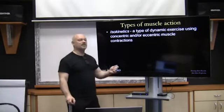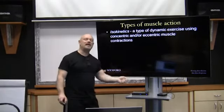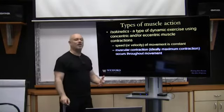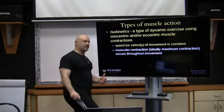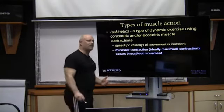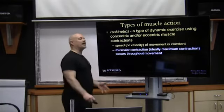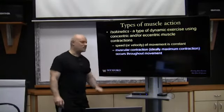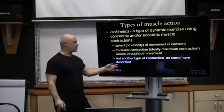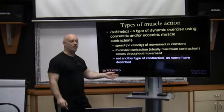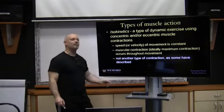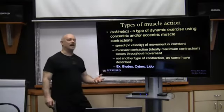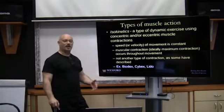Isokinetics uses a type of dynamic exercise where the speed is controlled. So the speed is controlled whether you're doing knee extension, knee flexion, hip extension, or hip flexion — the speed is controlled because you're going against resistance on the machine. What they're trying to look at is how much force you develop at a controlled speed. It's not really another type of contraction — it's just trying to see how much force you can produce in a particular type of muscle action. Biodex, Cybex, and Lido make these specific types of machines, used a lot in physical therapy and athletic training for rehabilitation.